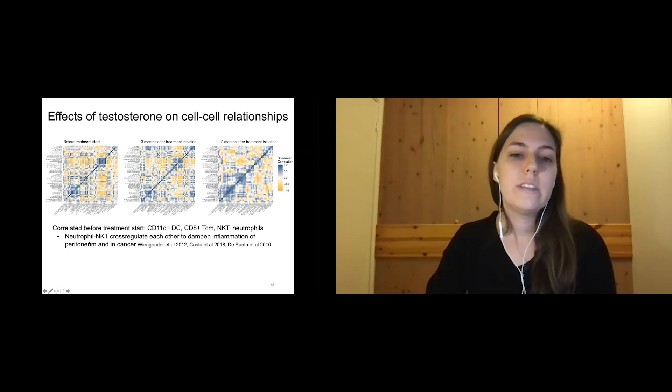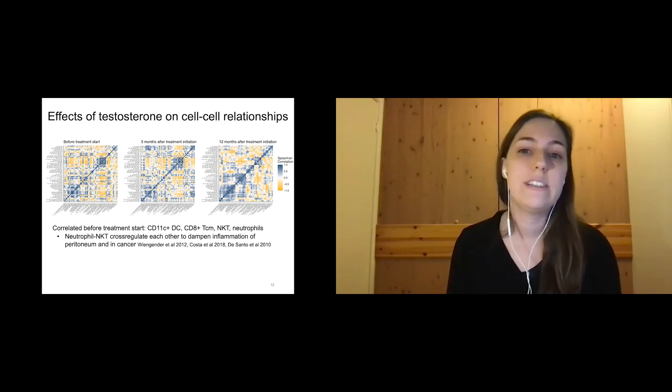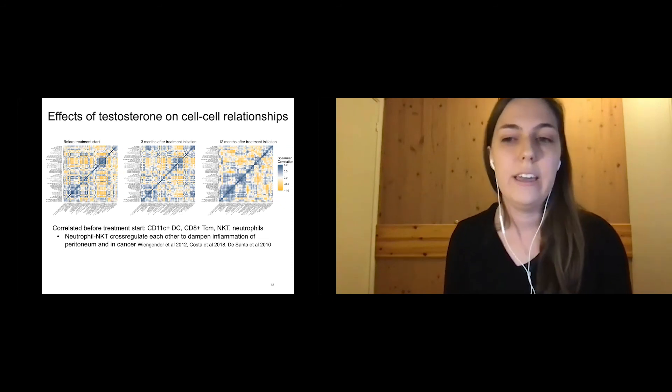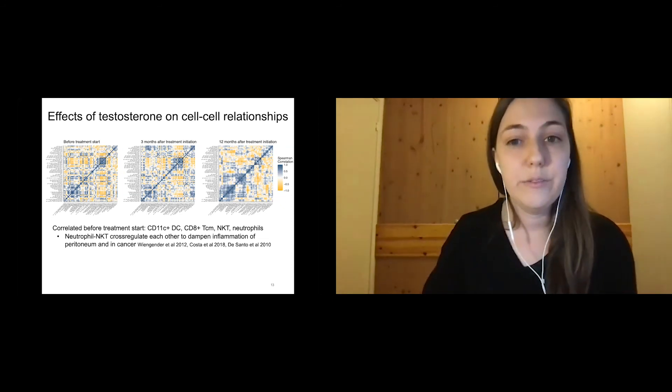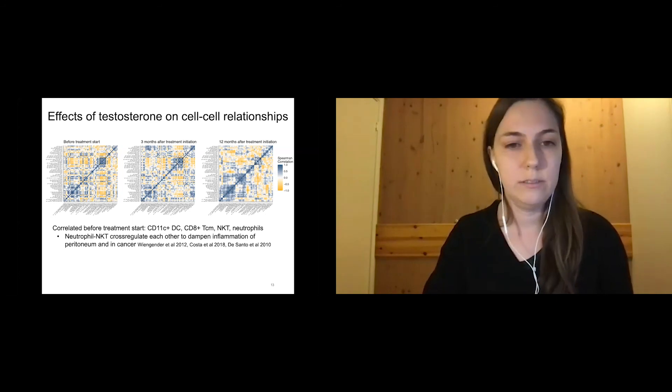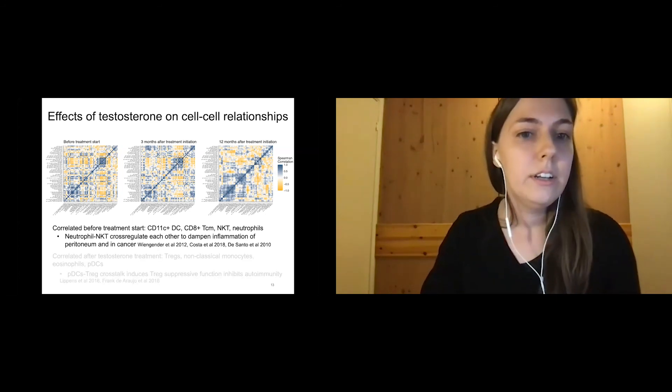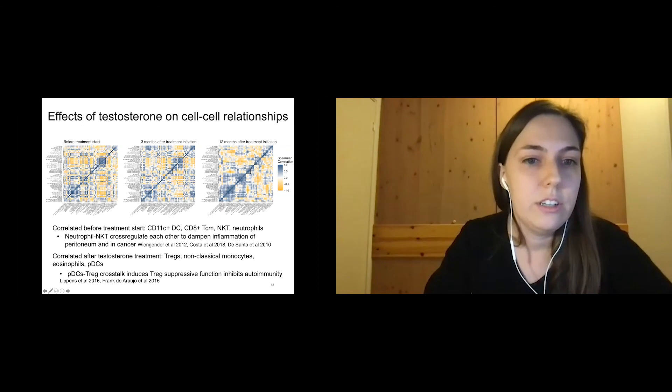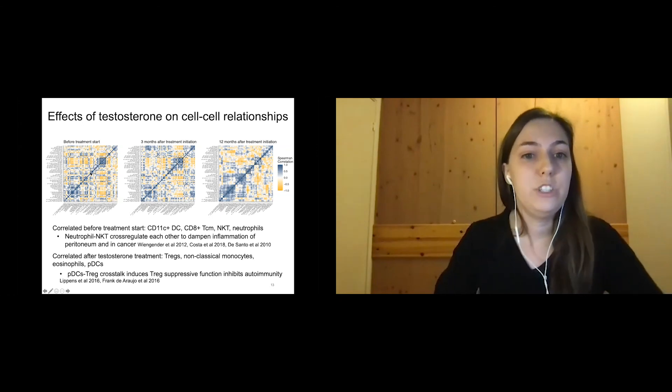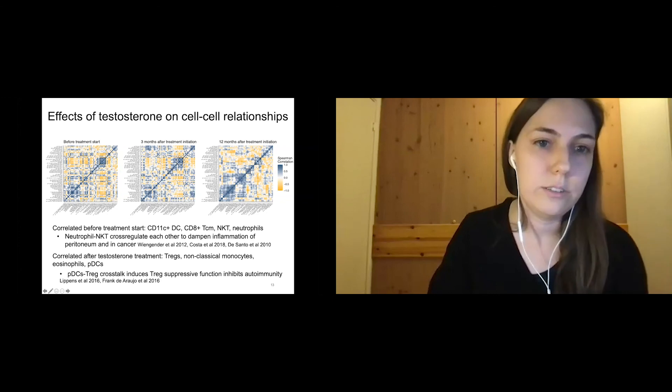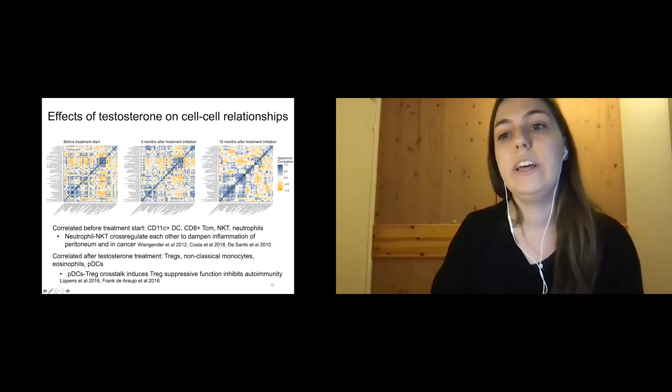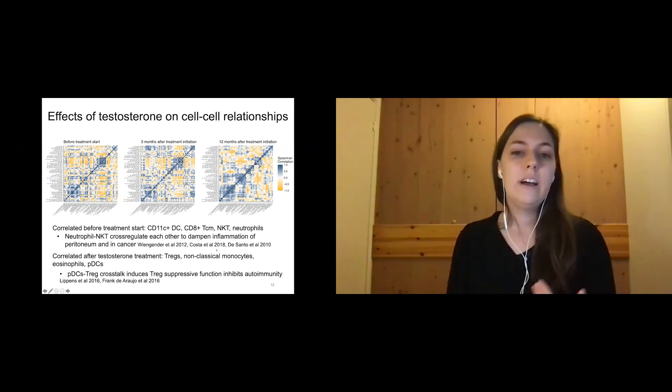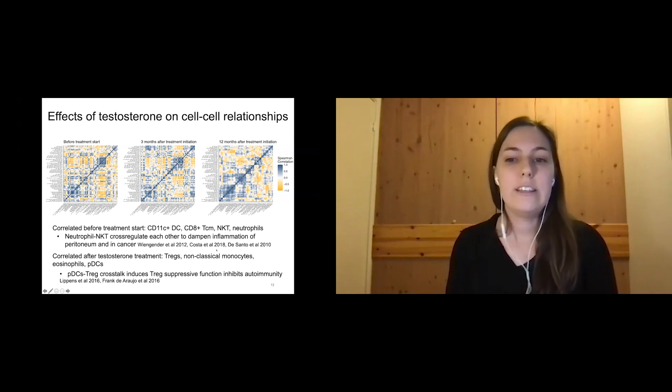Such populations include CD11c+ DCs being correlated with central memory CD8s and NKTs and neutrophils. It's been shown that the crosstalk of some of these cells is important to dampen inflammation. So the fact that they're not as highly correlated could implicate in the extent of where inflammation happens in these subjects upon an encounter. Another cell population or cell-cell relationship that has been changing, so before the start of the treatment, they weren't correlated and now they become correlated are Tregs, non-classical monocytes, eosinophils, and pDCs.